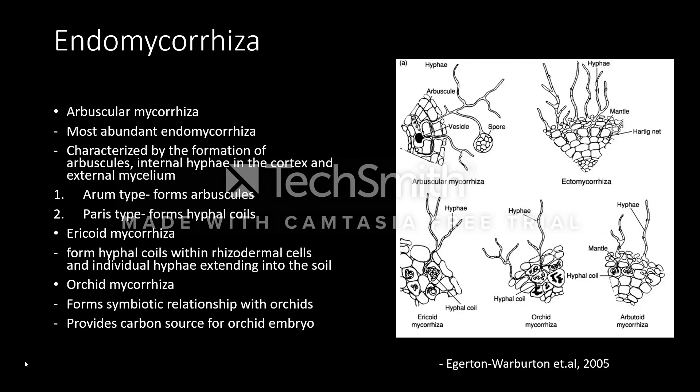There are three types of endomycorrhiza. The arbuscular mycorrhiza are the most abundant endomycorrhizals on earth. They form arbuscules, internal hyphae, and external mycelium. There are two types: the arum types form arbuscules, and the paris types form hyphal coils within cortical cells.